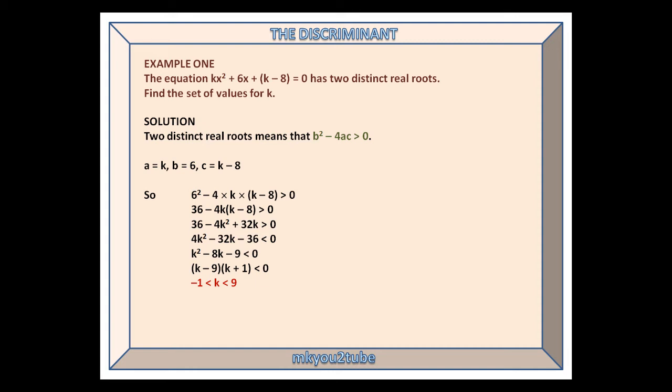Start by identifying a, b, and c: a is k, b is 6, and c is k minus 8. Substitute them into b squared minus 4ac is greater than 0. So, 6 squared minus 4 times k times k minus 8 is more than 0. And after some manipulation, this simplifies to k squared minus 8k minus 9 is less than 0, from which (k minus 9)(k plus 1) is less than 0. Applying our method of quadratic inequalities, a link below if you need it, k lies between minus 1 and 9.